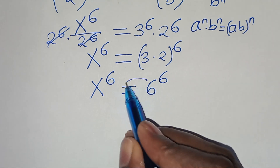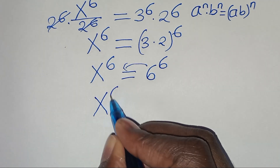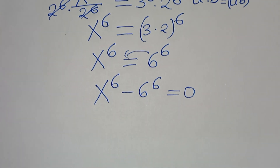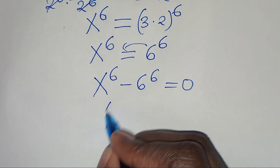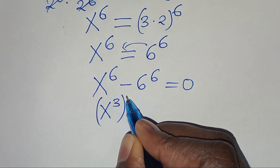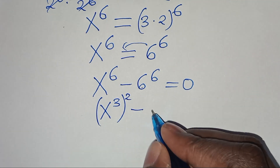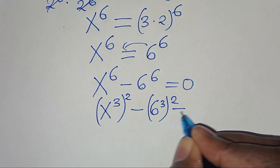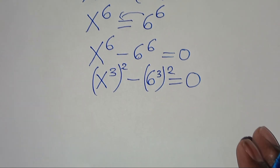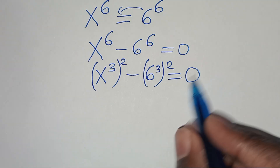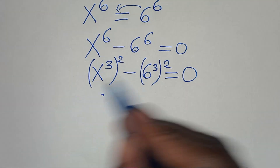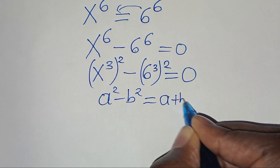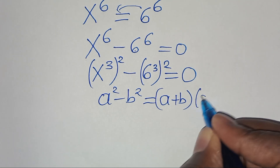Let's take 6^6 to the left-hand side so that we have x^6 minus 6^6 equals 0. We can express x^6 as (x^3)^2, and 6^6 as (6^3)^2, giving us (x^3)^2 minus (6^3)^2 equals 0. This is in the form of a squared minus b squared, which we can express as (a+b)(a-b) equals 0.